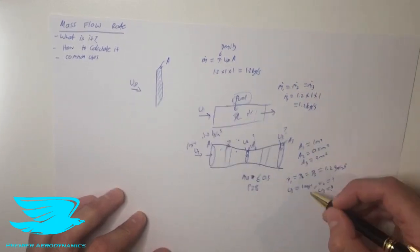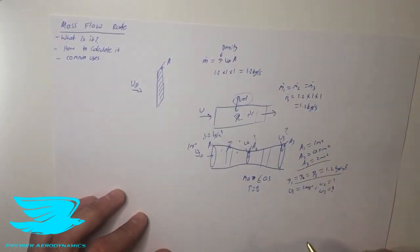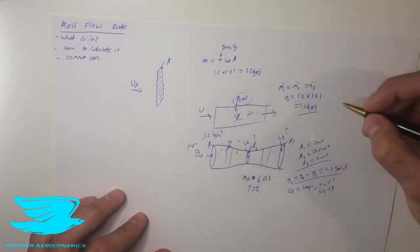So to figure out what the velocity at stations 2 and stations 3 are, it's quite simple. We already know the density, we already know the area at these points and we know the mass flow rates. We just rearrange the equations to find what u2 and u3 are.